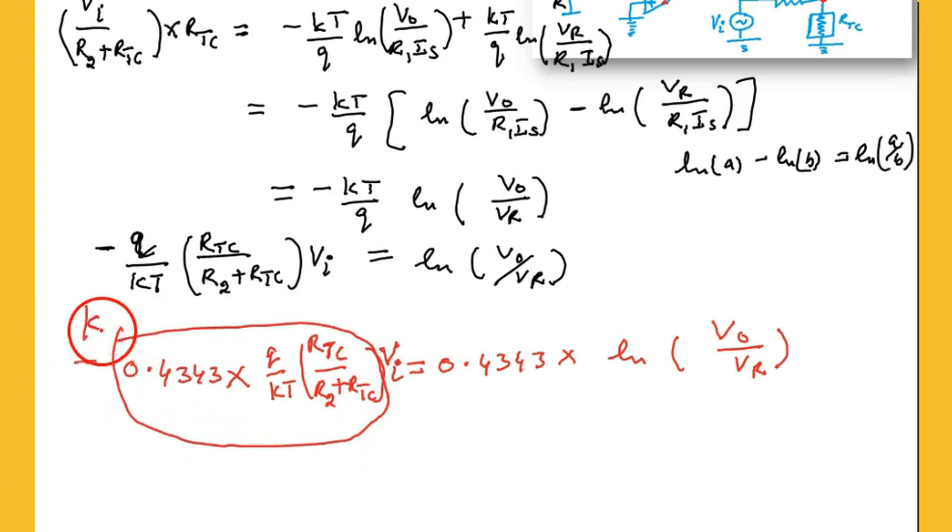This whole term, let me call it k prime. So this k prime into vi which is input voltage, and now it is log to the base, now it is log to the base 10 now.